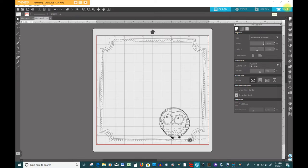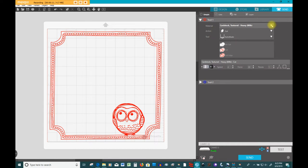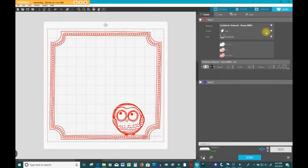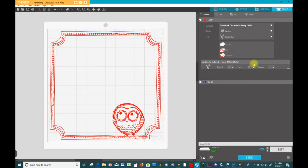Now that I have my design set up exactly the way I want on the page, I'm going to click on send, right up in the upper right-hand corner, and make sure my paper is set to what I'm using, which is heavy cardstock. And then for action, I will select sketch, and that will automatically change the tool to sketch pen. You can leave that exactly as it is, and then you're ready to click on send.